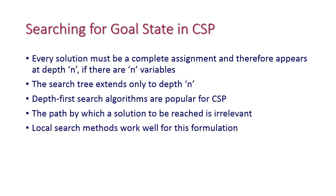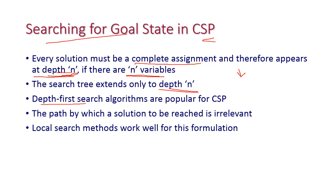After converting the map into a graph, we need to search for the goal state in CSP. Every solution must be a complete assignment, therefore it appears at depth n — if there are n variables, the solution appears at depth n. The search tree expands only to depth n. Depth-first search algorithms are very popular for solving CSP problems. The path by which the solution is reached is irrelevant because there are many possible solutions. Local search methods also work well for this formulation.